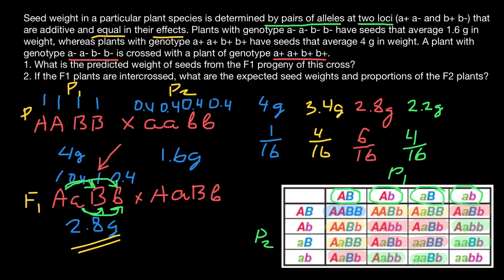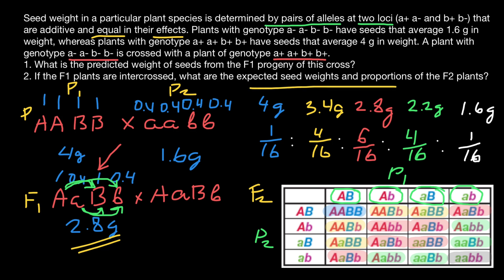The last variant is plants where all four alleles are recessive (aabb), occurring only once out of 16. The seed weight is 4 × 0.4 = 1.6 grams, frequency 1/16. To summarize: expected seed weights are 1.6, 2.2, 2.8, 3.4, and 4.0 grams with proportions of 1:4:6:4:1 out of 16.